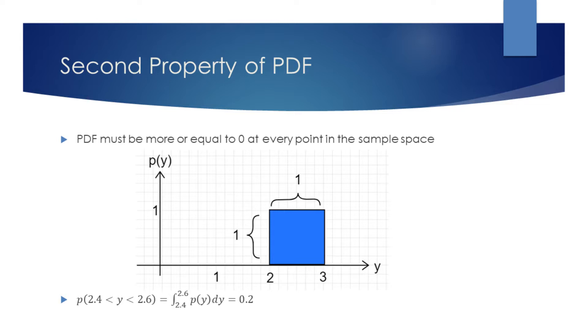The diagram on the slide shows the PDF corresponding to our example. We can see that at any point between 2 and 3, PDF is equal to 1. For example, at y equaling 2.5, PDF is 1. But this does not mean that this event will always occur.